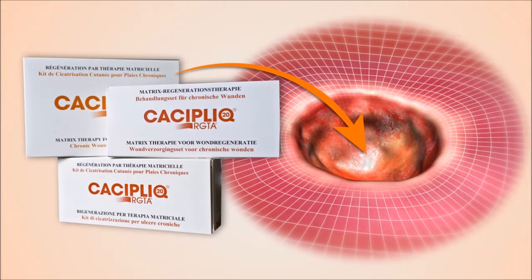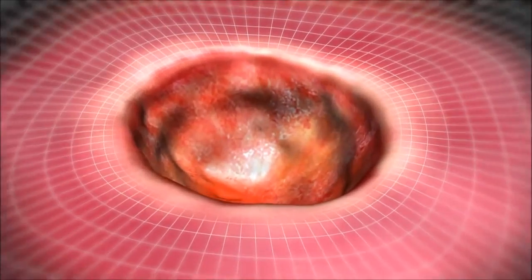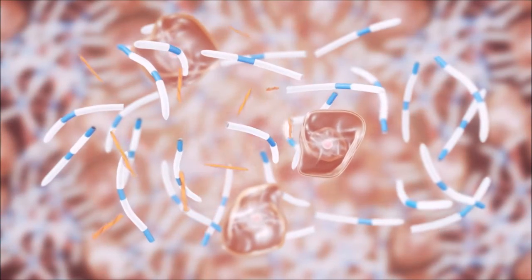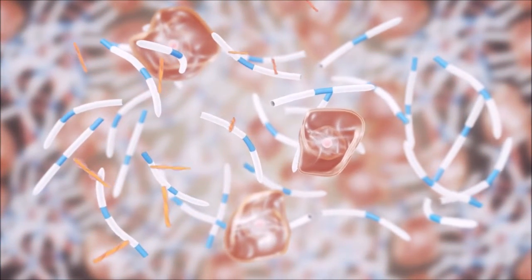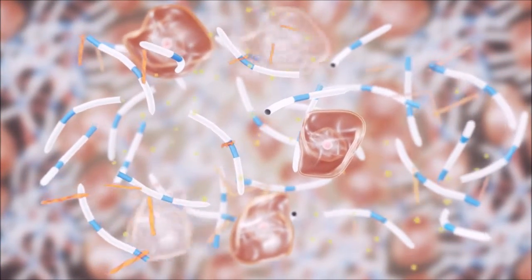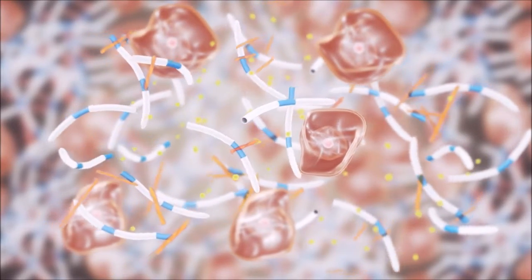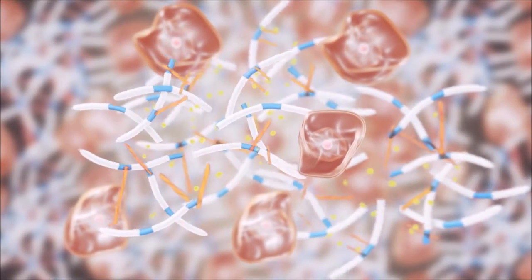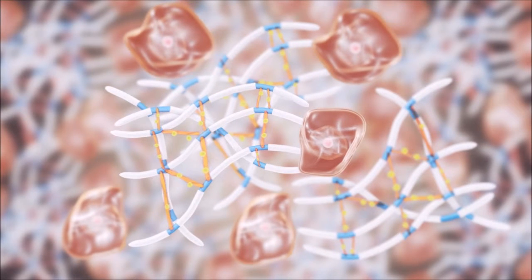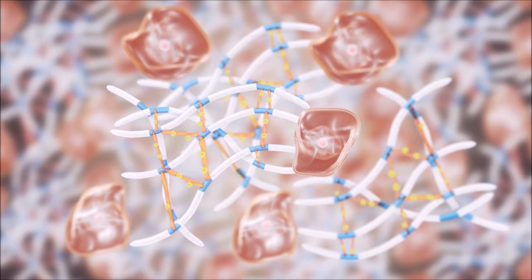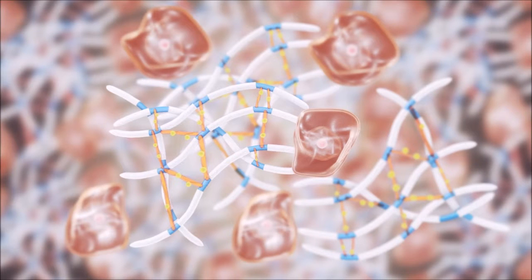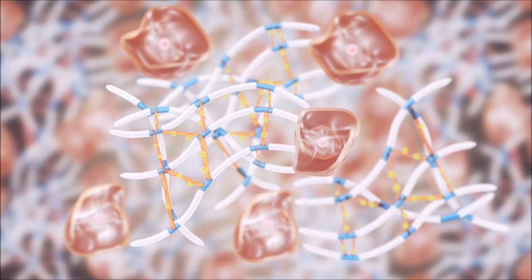Our RGTA are engineered to mimic and take the place of the destroyed heparin sulfates. Introduced at the site of the injury, they bind to the proteins of the scaffold where the room is available and they are big enough to bridge the matrix proteins and to restore the cellular environment, reconstruct the scaffold and become the storage and protective locus of the newly produced growth factors and other signals by the remaining healthy neighboring cells.